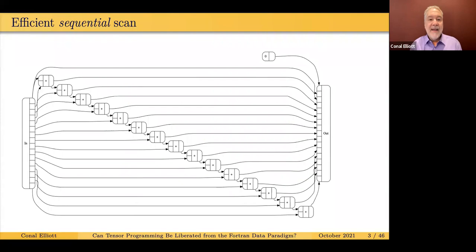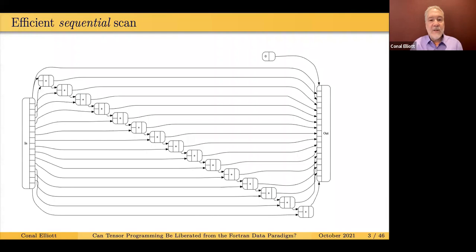Here's a picture of a computation. This is an efficient sequential scan. If you have a mid-20th century machine that was a genuinely sequential machine, you might want this kind of computation. Left to right is time, and the time depends on the data dependencies. On a sequential machine, each input you add to a running sum — that's what's going on here.